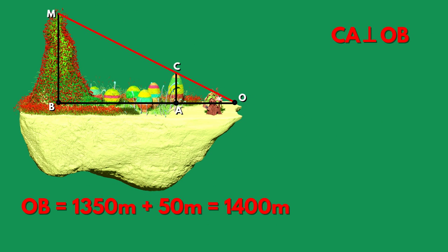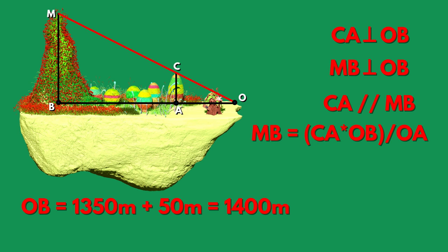They apply the fundamental theorem of similarity in the OMB triangle because according to this theorem, the triangles OCA and OMB are similar and for the similarity ratio we get the mountain height.